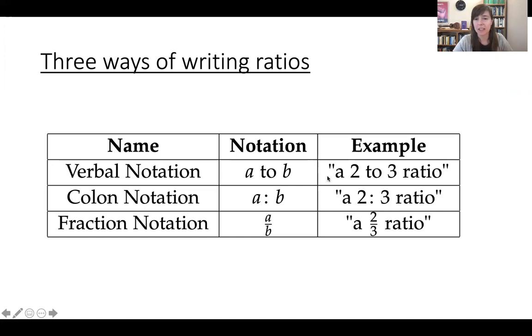So for example, you might read something that if a was two and b was three, these things occur in a two to three ratio. Or in colon notation means the same thing, but we write it a colon b, and so you might see something written as a two colon three ratio.